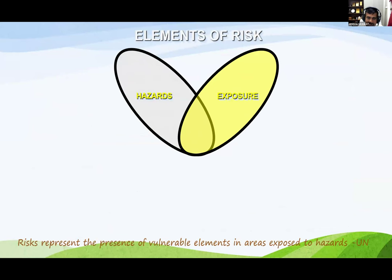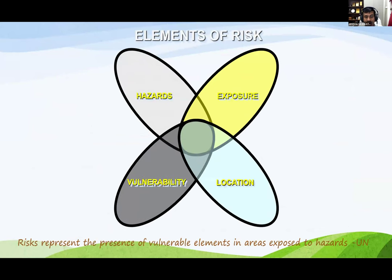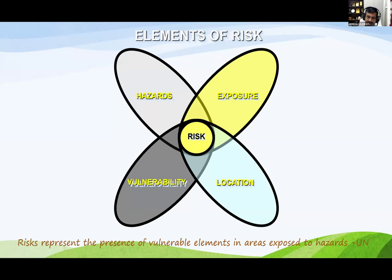Disaster risk reduction is a no-regret investment that protects lives and property. The UN says risk can be represented by four elements: hazard, exposure, vulnerability and location. If we can eliminate any one of these, we can avoid the risk completely. This is equally applicable to any kind of disaster or risk. For example, if an earthquake happens in Greenland where there are no people, there is no disaster — because there are no buildings.